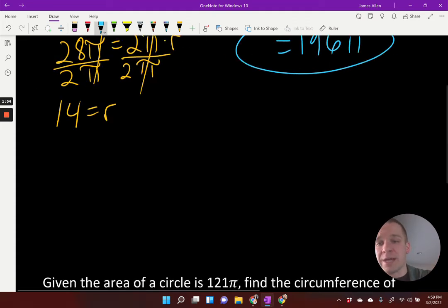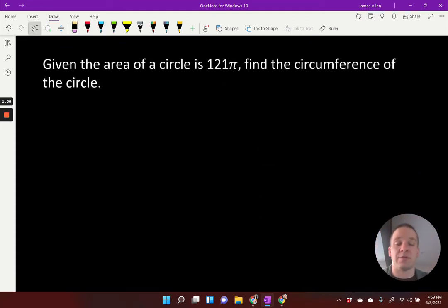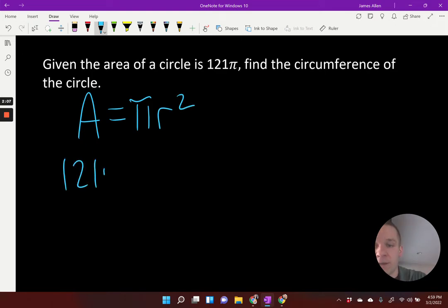Can we go the other direction? Let's see here. Given the area of a circle is 121π, find the circumference. Well, now I'm taking that area formula, which is π times the radius squared, and I'm going to take the 121π and set that equal to π times my radius squared.